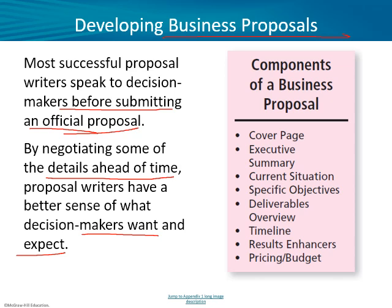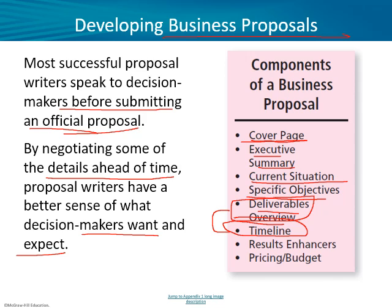The components of a business proposal include: cover page, executive summary, current situation, specific objectives, deliverables, overview, and timeline. I want to highlight the deliverables, overview, and timeline because these tend to get ignored when they're actually absolutely critical — at least from the point of view of the person funding the research. Then there are results enhancers and pricing and budget.